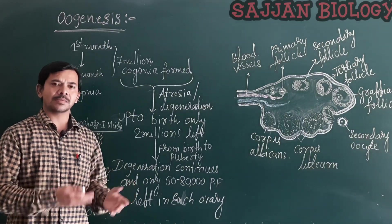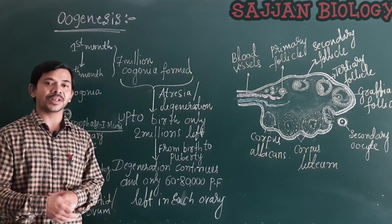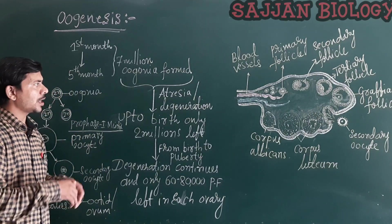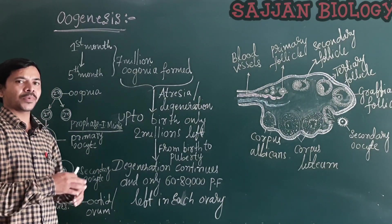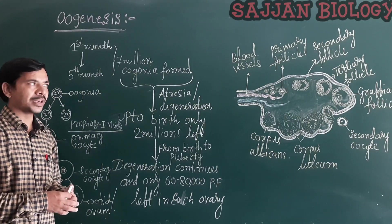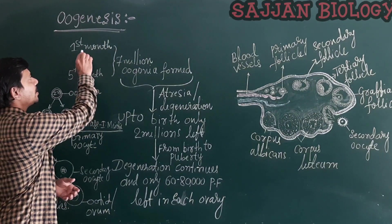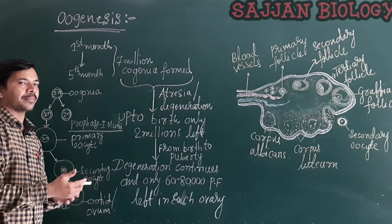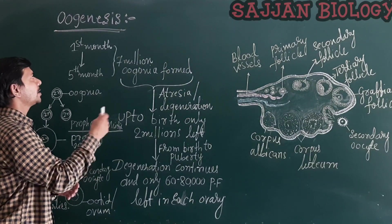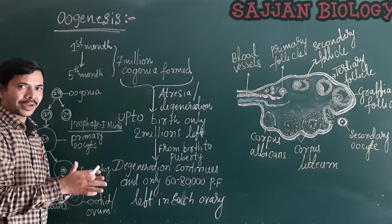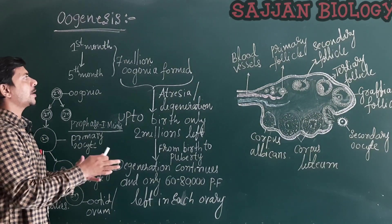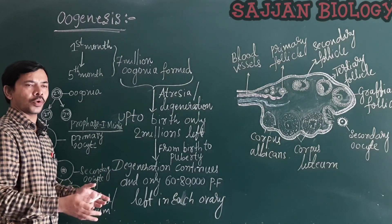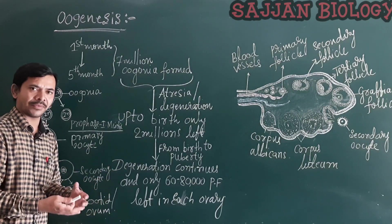Spermatogenesis starts at the time of puberty, but oogenesis starts during embryonic development. In the undifferentiated ovary, when a female baby is formed, it starts to produce millions of oogonia by mitotic division.